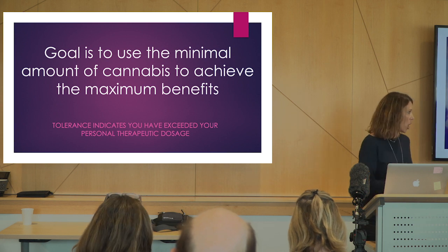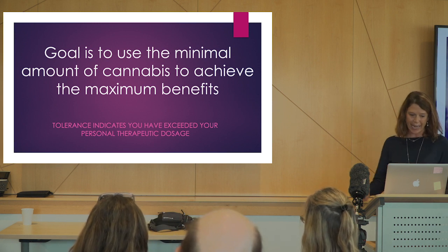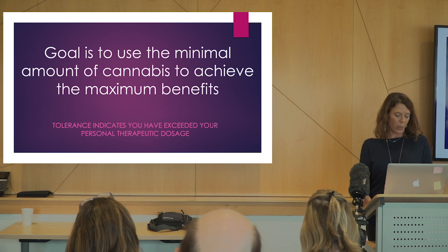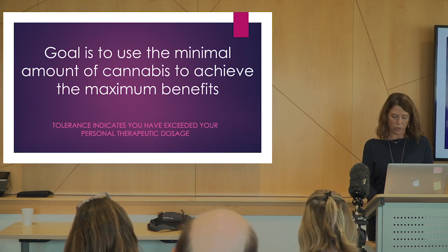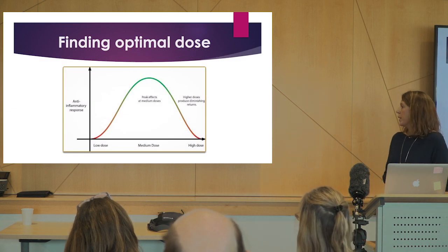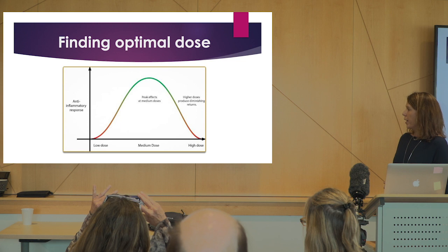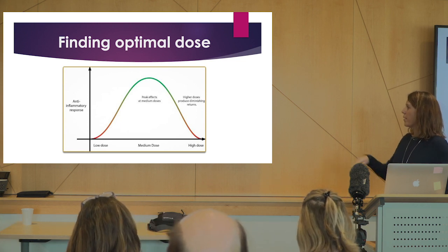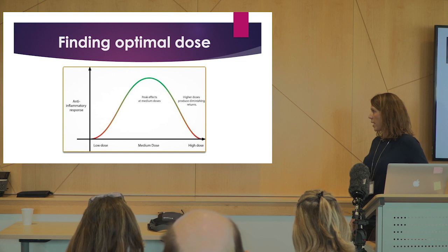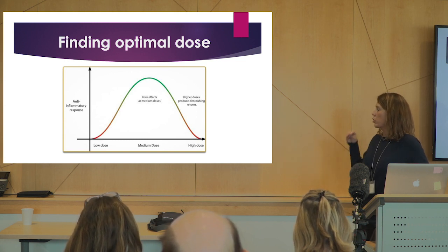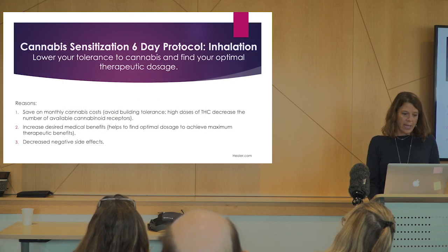The goal for physicians is always to use a minimal amount of whatever medication to achieve a maximal benefit — that's not unique to this drug category. What is interesting is that tolerance may indicate you've exceeded your therapeutic dose. It draws upon a Gaussian curve: you increase your dose targeting pain, anti-inflammation, agitation, anxiety, or sleep, and watch the titration. If you start to lose benefit and try to escalate dose, you've probably already gone beyond the optimal therapeutic point — especially with THC.